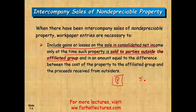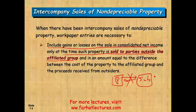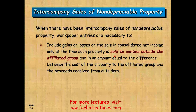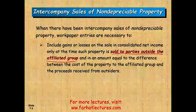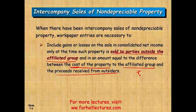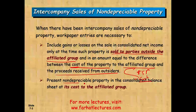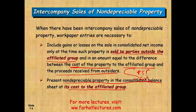Work paper entries are necessary to include gains and losses on the sale in consolidated net income only at the time the property is sold to an outside affiliate group. Any gain or loss between the parent and sub is eliminated; only gains or losses with outsiders are recorded. The difference is between the cost of the property to the affiliated group and the proceeds received. Non-depreciable property must be presented in the consolidated balance sheet at its cost to the affiliated group.